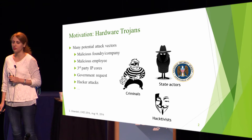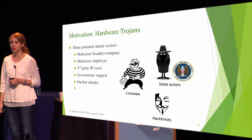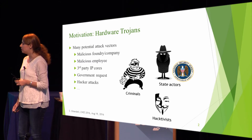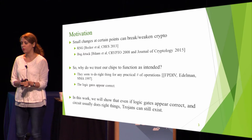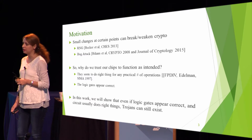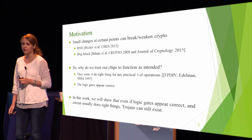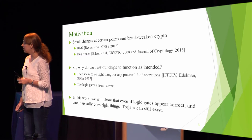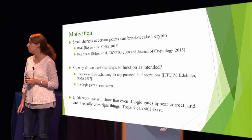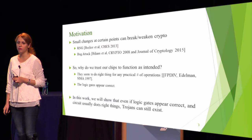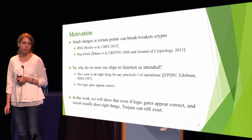Hardware Trojans get a lot of attention these days, with many potential attack vectors such as malicious employees, malicious IC design companies under government pressure, or third-party IP cores. Small changes at certain points of the circuit can break or weaken crypto. For example, in 2013, Becker had a paper proposing a hardware Trojan methodology evaluated on the Intel random number generator. Or in 2008, Biham and Shamir showed that decrypting ciphertext on any computer that computes incorrectly for at least one pair of numbers allows an attacker to leak the secret key. So these small changes can be a secret disaster.